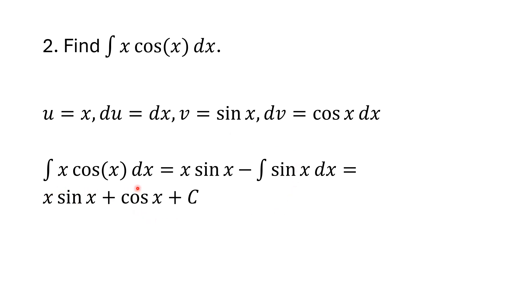What I end up with is my original integral u·v = x·sin(x), minus, from the formula, the integral of v·du, which is the integral of sin(x) dx. I can integrate sine. The integral of sine is negative cosine. So I get x·sin(x), and two negatives make a positive, plus cos(x) plus C.